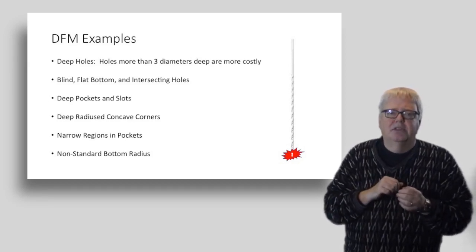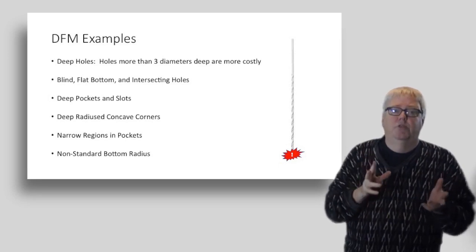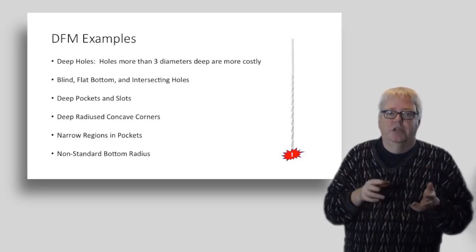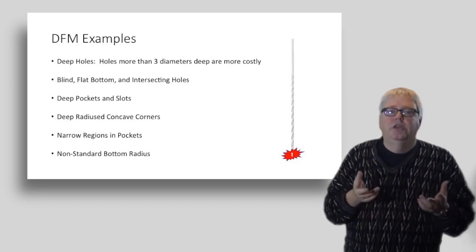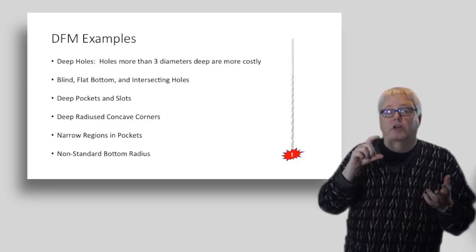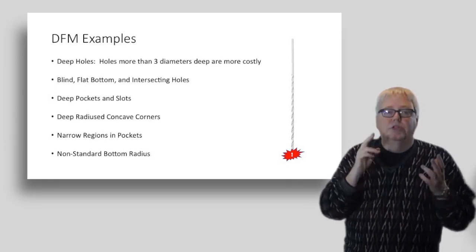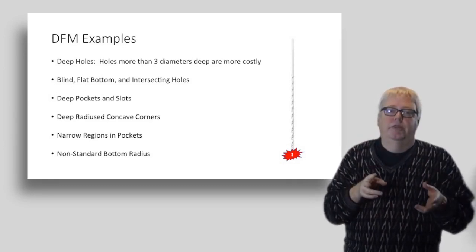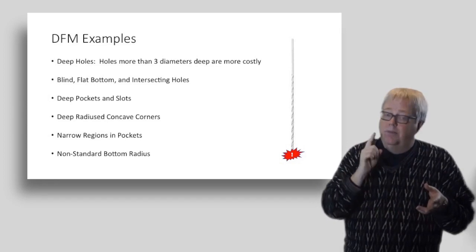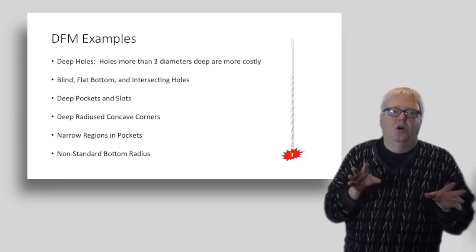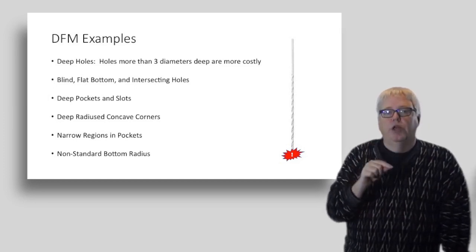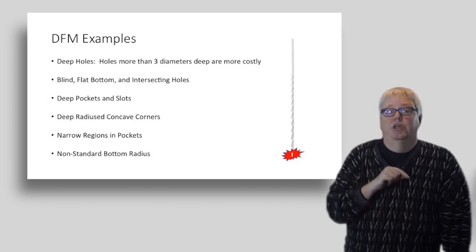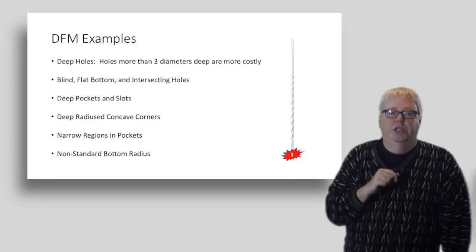Deep pockets and slots. What machinist hasn't fussed and fumed over a part with these features? Likewise, tight radiuses and narrow regions. All of these things force smaller diameter cutters, often that are longer, and they're prone to deflection and all the problems that go with that. Again, I've got a CNC chef video that's all about tool deflection. Check it out. These are all areas that if you can change the parts designed to avoid them, your customer is going to save cost and they'll often appreciate that.